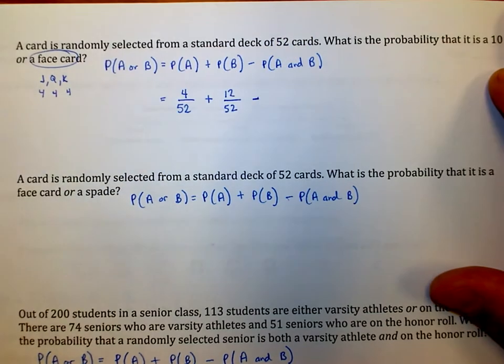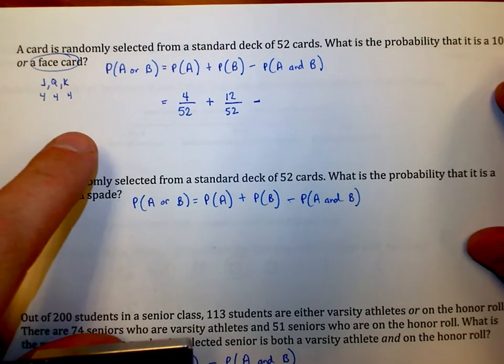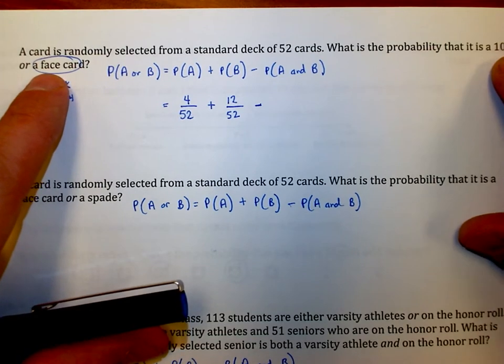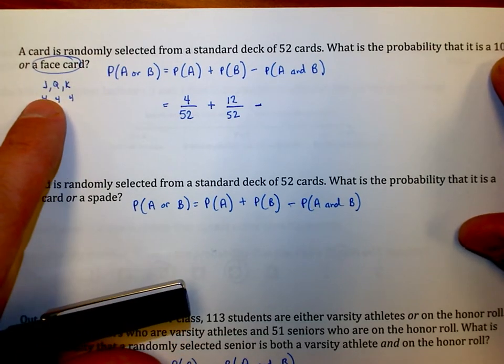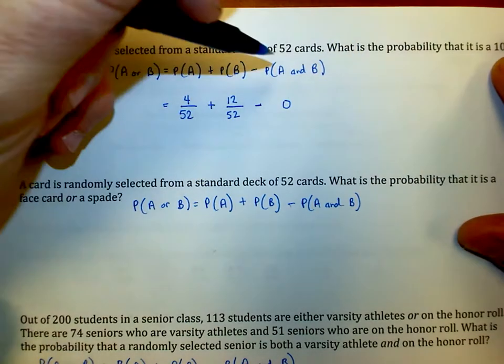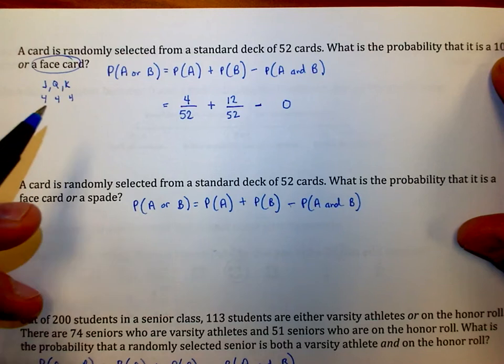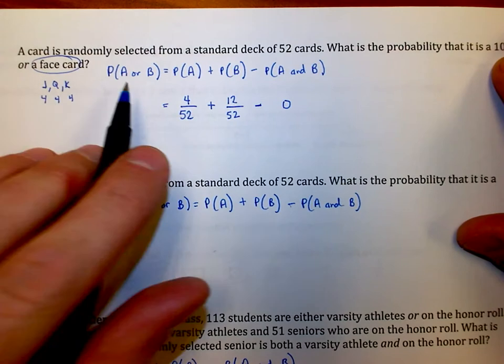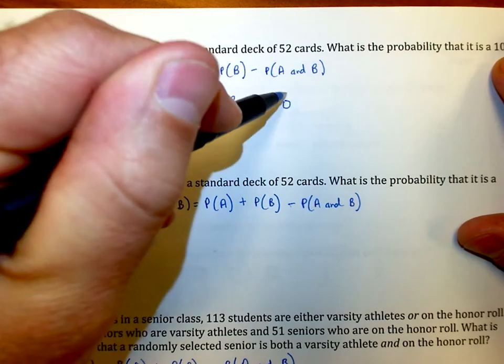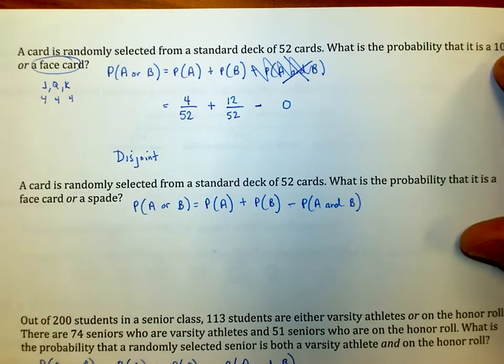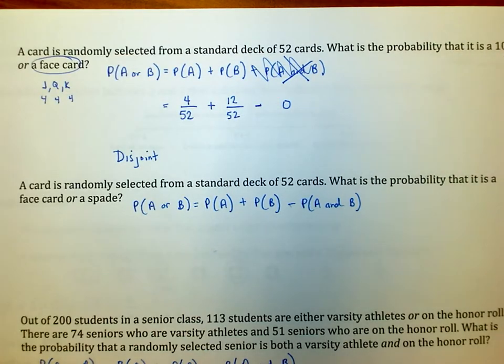Now, is it possible to have a 10 that is a face card? Is it possible to meet both requirements at the same time? The obvious answer is no, because a 10 isn't included in a face card. In other words, we know that these are disjoint events because they don't overlap at all. There's no possibility to get a 10 and a face card, which means that this thing right here is going to go away. We could leave it off, scratch it out, or just say we're going to subtract zero.